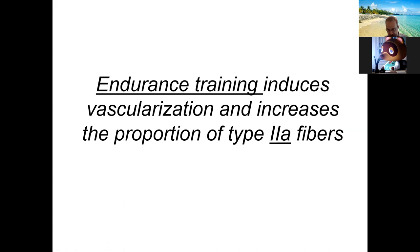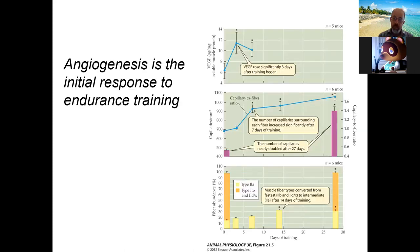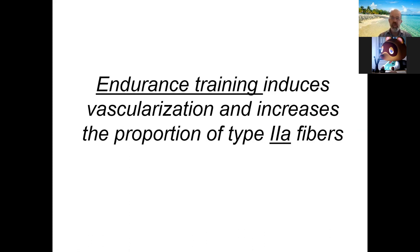Skeletal muscle is considered non-mitotic and terminally differentiated. So if skeletal muscles don't divide to make new muscle, where do the additional type 2A fibers come from? They must come from one of the other two types — type 1 or type 2X. With endurance training, we see an increase in vascularization and an increase in the proportion of type 2A fibers.